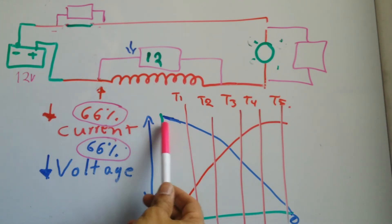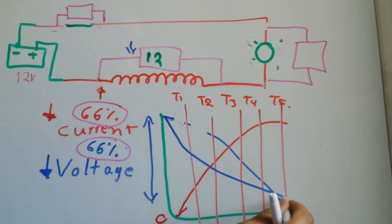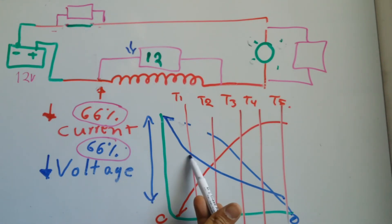In those time constants, what is going to happen is that the voltage is going to drop 66% actually. The voltage dropped by 66%, and then from that point to this time constant, it drops another 66%. From here to this point it drops another 66%. So by the time the fifth time constant is over, voltage will almost be 0.